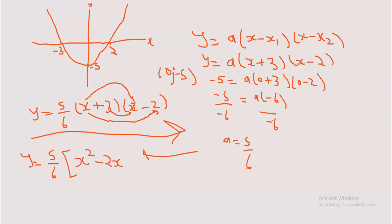And then we finish off with the two numbers: 3 times negative 2 gives us minus 6. Then we close the bracket and simplify. So y equals 5/6 times the bracket. The like terms: negative 2x plus 3x gives us positive x. So inside the bracket we have x squared plus x minus 6.